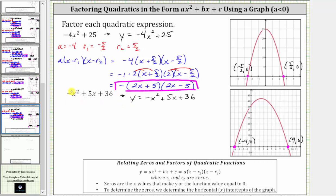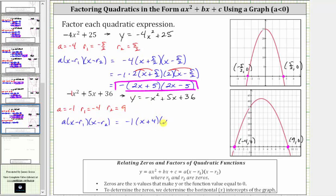Looking at the expression, we know that a, the coefficient of x squared, is negative one. R sub one is negative four, and r sub two is positive nine. Writing the expression in the form a times the quantity x minus r sub one times the quantity x minus r sub two gives us negative one times the quantity x minus negative four, which simplifies to x plus four, times the quantity x minus nine. This is the factored form — we can leave the negative one, or just write it as negative times the quantity x plus four times the quantity x minus nine. Either is correct.